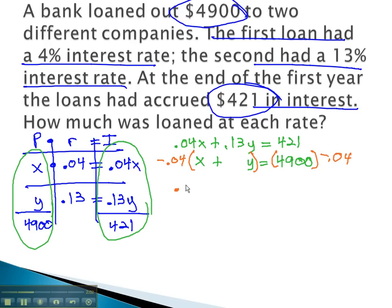As we do, the first equation is unchanged. The first equation is .04x plus .13y equals 421. The second equation now, after distributing, is negative .04x minus .04y equals negative 196.